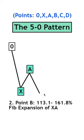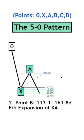And now for point B, all we need is a Fibonacci expansion from move X to A in the direction of point B, where it needs to land between 113.1 and the 161.8 level.